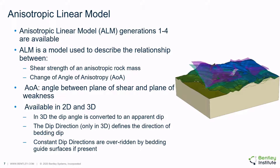The angle of the bedding plane is defined differently in 2D versus 3D. In 2D, this is the angle of the bedding plane calculated counterclockwise from the horizontal. In 3D, it's the angle downward from horizontal along the dip direction. The dip direction, which is only defined in 3D, defines the direction that the bedding dips downward along — it's orthogonal to the strike direction, and an angle of 0 degrees points straight along the negative x-axis.